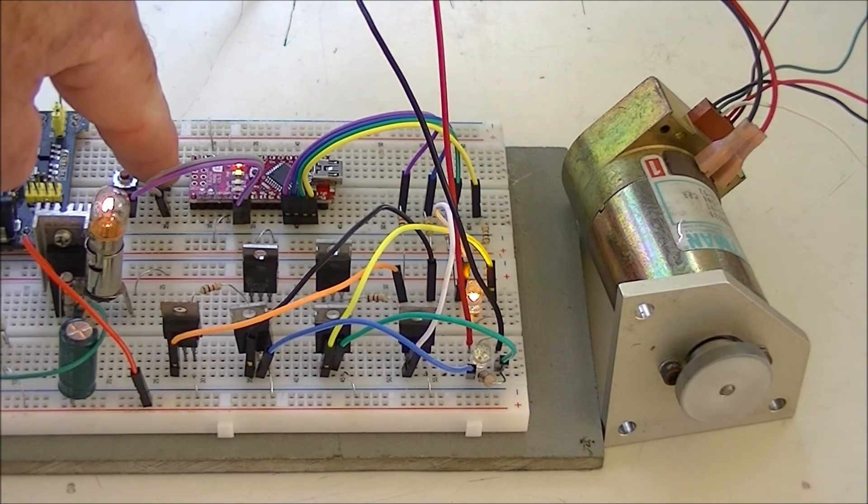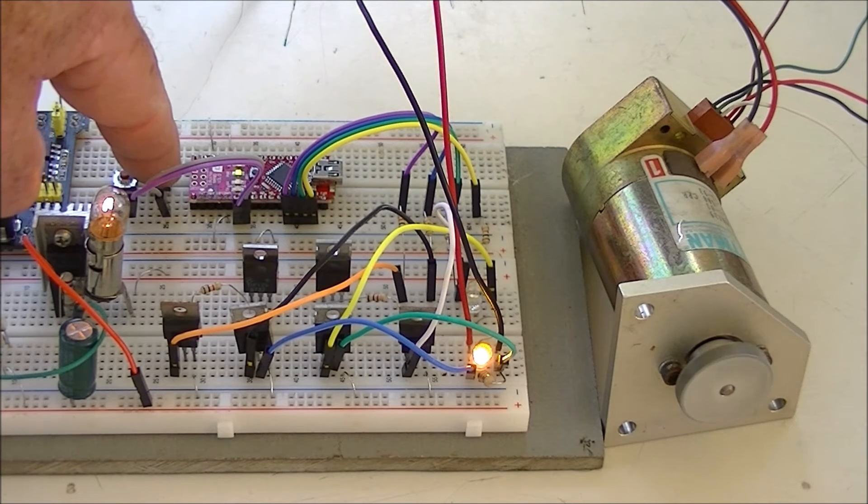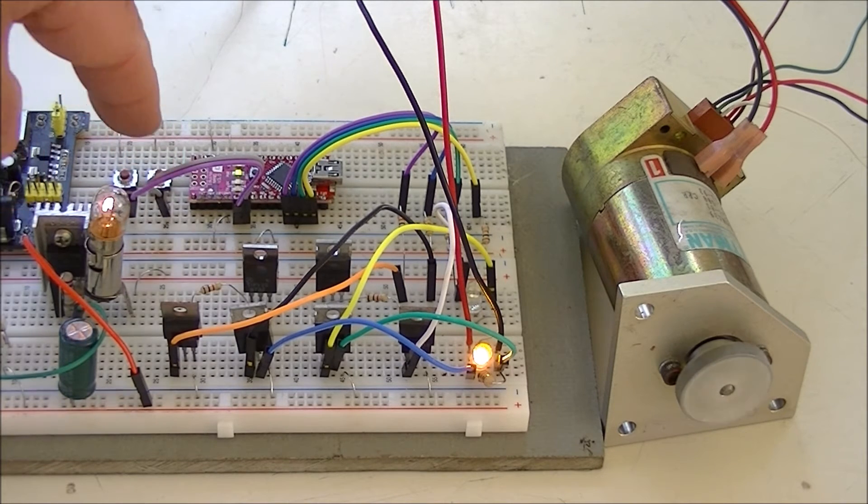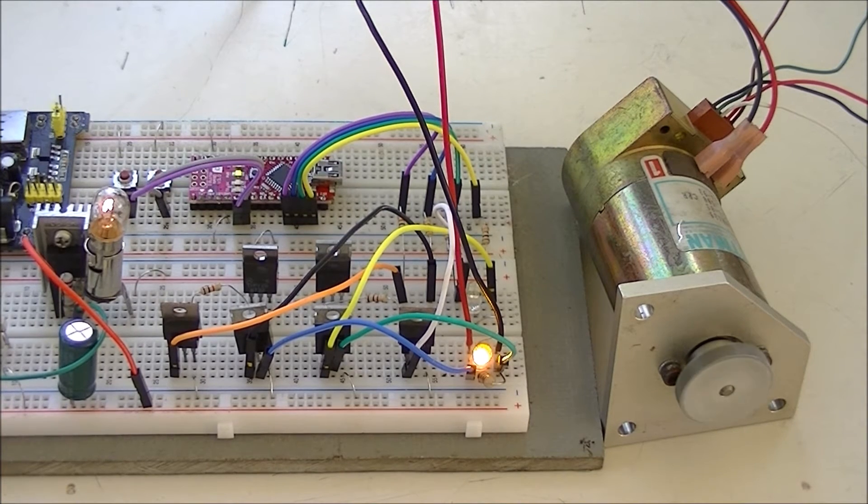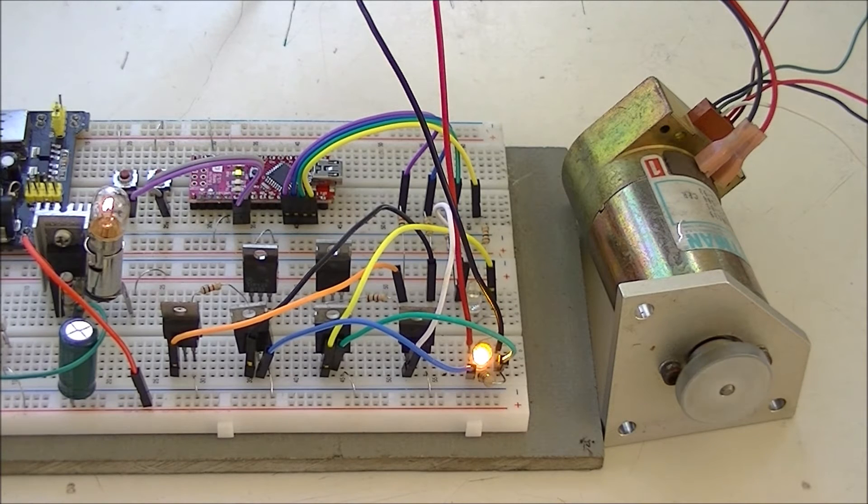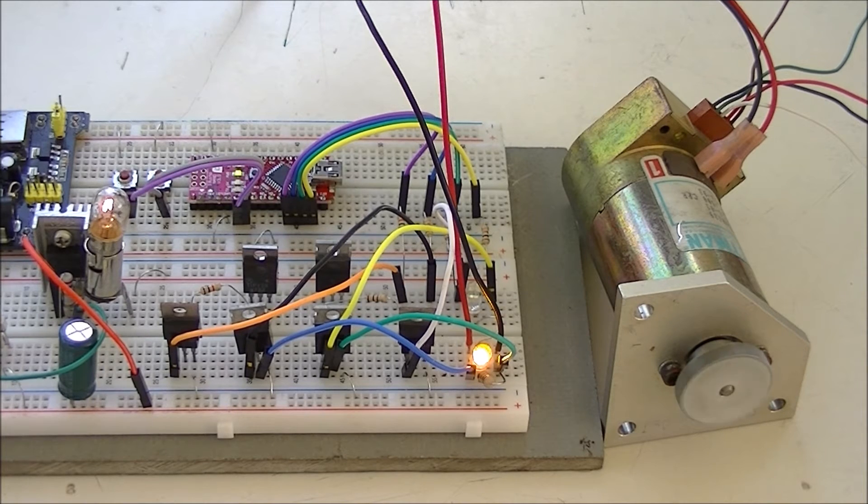Let's reverse the polarity. You notice the motor stopped before it started spinning again. All this light bulb is indicating is that the motor is drawing more than the resistor control for the LM317 is allowing. So it's dropping a few more volts. Which is okay.